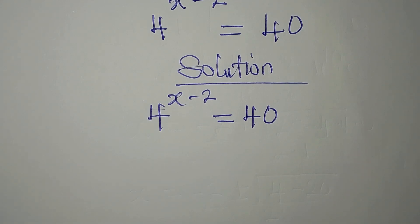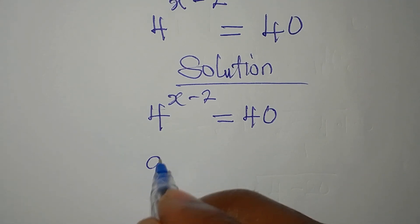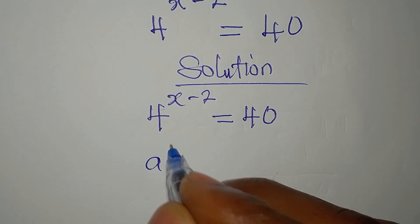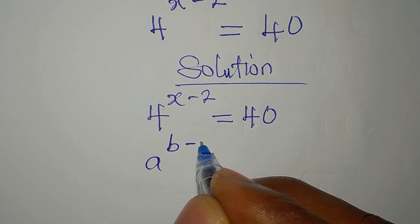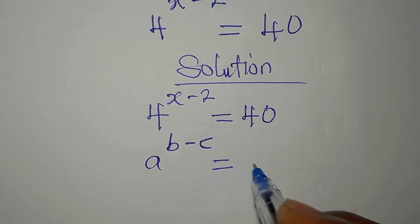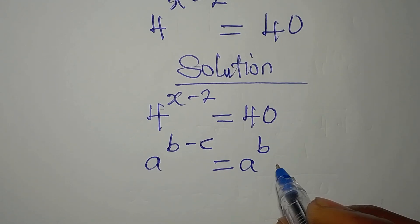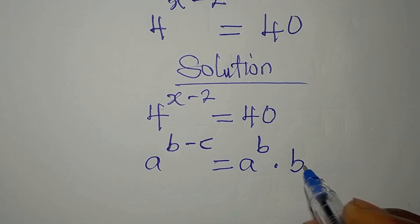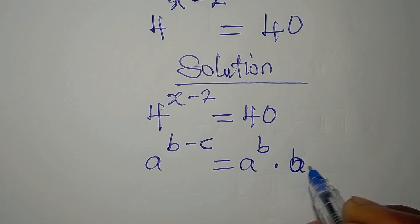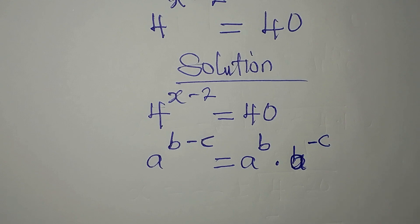What we are going to do here is this: do you know that if you have a to the power of b minus c, this is the same thing as a to the power of b, times a again to the power of negative c?